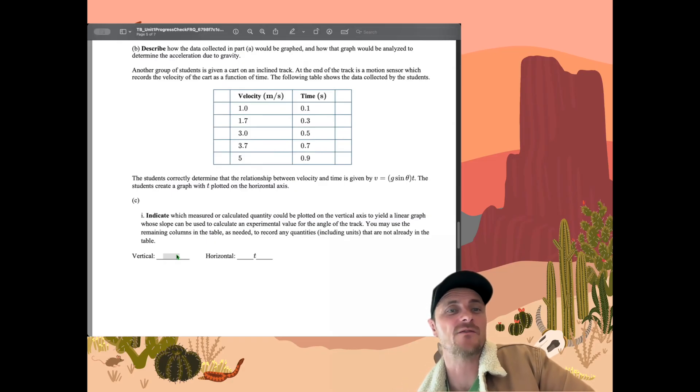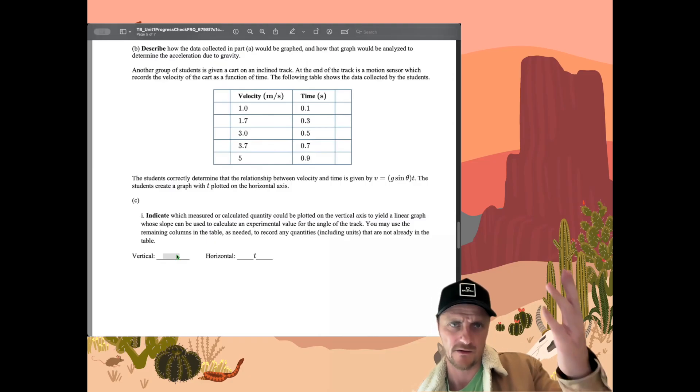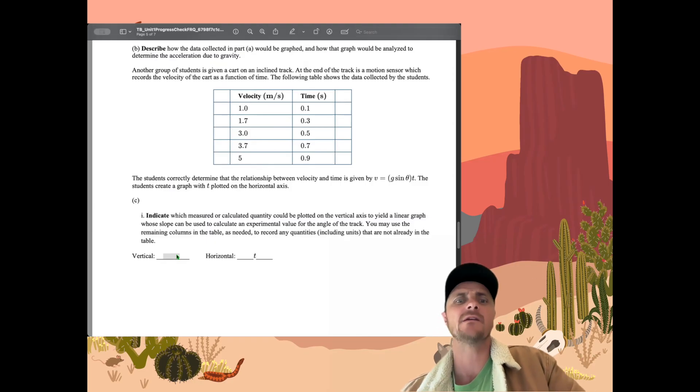So just looking at this, if I'm a grader, I'm seeing that the student clearly understands that they need to square time. And it's all based on this equation right here. And that when I rearrange this equation, I am getting a rise over a run, delta x over t squared, that would be equal to something that has the acceleration of gravity. And you probably want to state somewhere that that is the acceleration of gravity. So part b is done. I would box this. Okay, let's take a look at part c. Another group of students is given a cart on an inclined track. And at the end of the track is a motion sensor, and it's recording velocity of the cart as a function of time. And you can see the table right there. There's your velocities, there's your times.